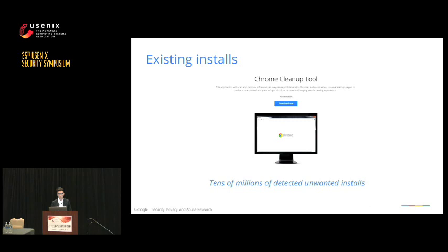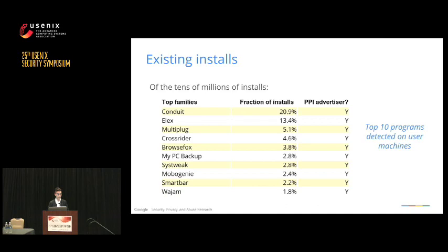For individuals who either don't heed the warning, didn't receive one, or had existing installs, we provide the Chrome cleanup tool. When we detect unwanted symptoms on a user's machine, we recommend they run this tool to clean up unwanted software. Via this tool, we've detected tens of millions of unwanted software installs — actual infections on a user's machine. All of the top 10 families detected by this tool are using PPI as a distribution platform, showing a strong relationship between unwanted software on user systems and this pay-per-install marketplace.